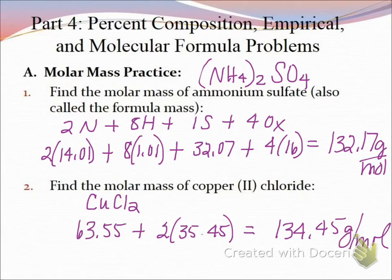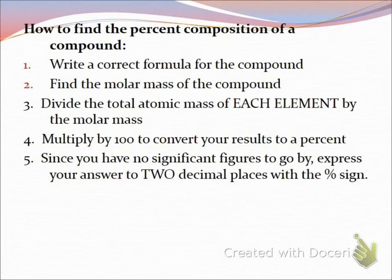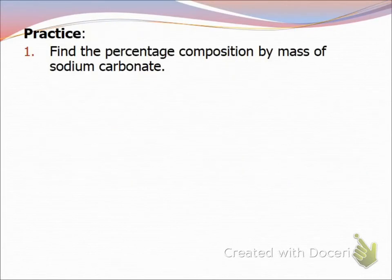Now we remember how to do molar mass, so we can do percent composition. You're going to write the correct formula, then find the molar mass because that's your whole. Then you divide the total mass of each element by the molar mass and multiply it by 100. We're going to report our percent compositions to two decimal places.